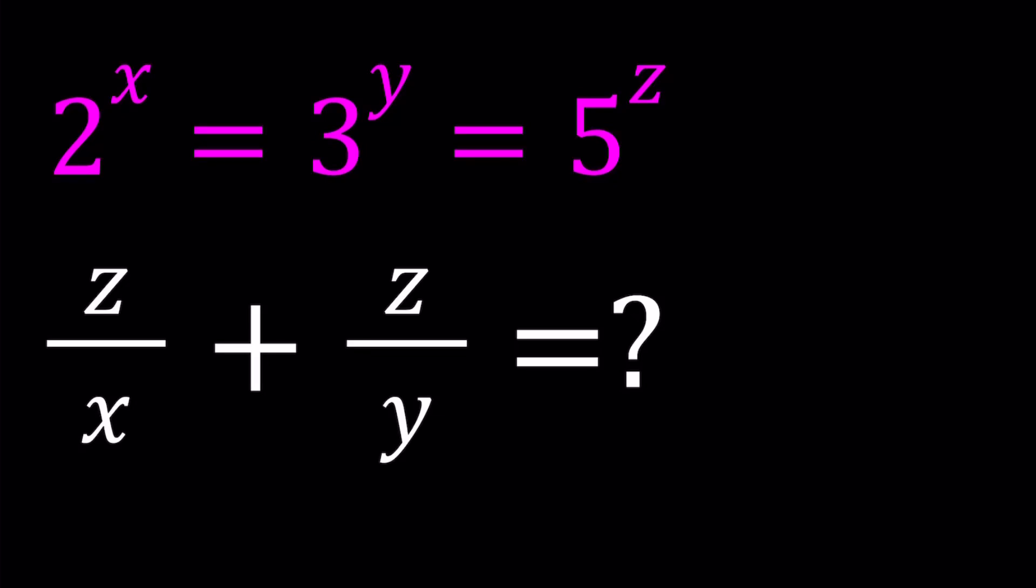Hello everyone. In this video we're going to be solving an exponential system. Why do I call it a system? Because there are two equations. We have 2^x = 3^y and 3^y = 5^z. And we're supposed to evaluate z/x + z/y numerically.